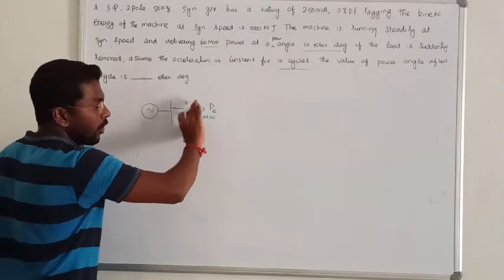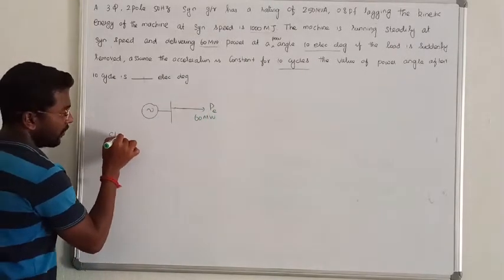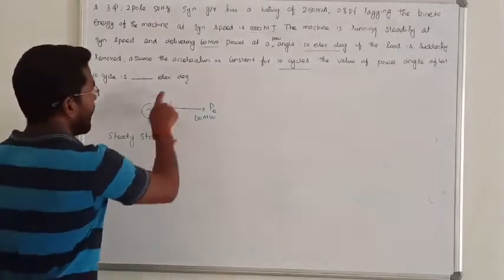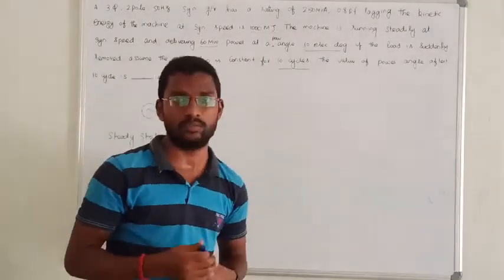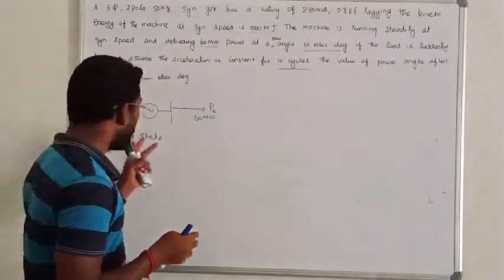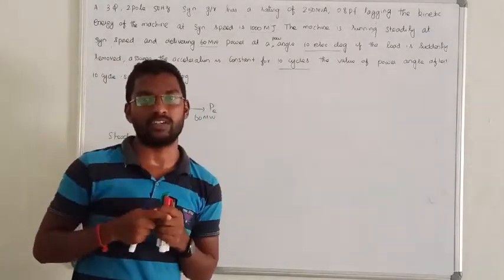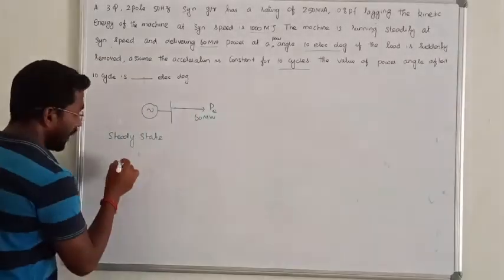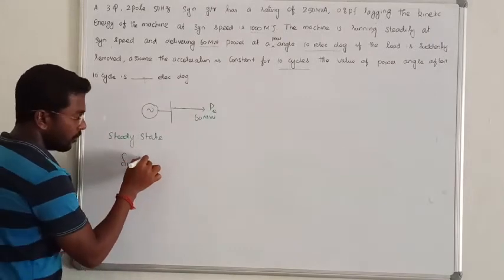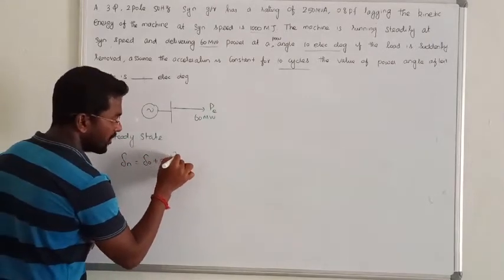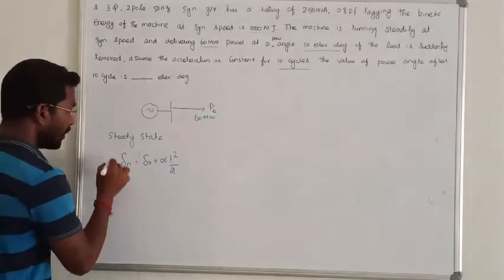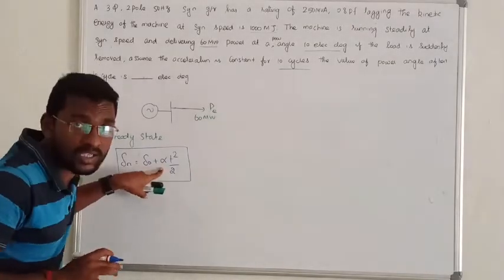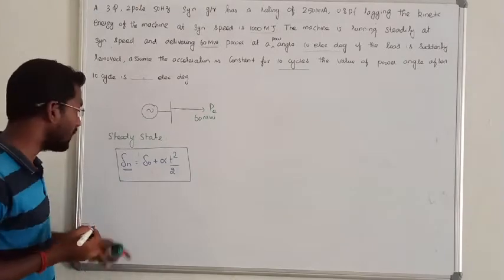Now looking at the equation of motion — the swing equation — we use the motion equation: δ_new is equal to δ_old plus alpha times t-squared divided by 2. That is the motion equation. We are using this equation to find out the new value of δ.